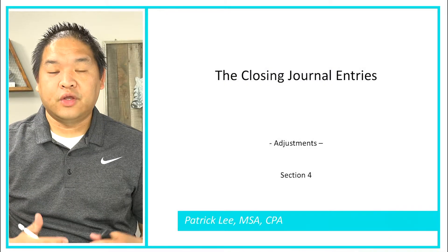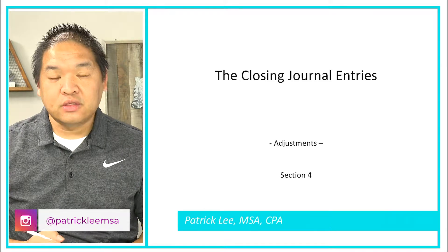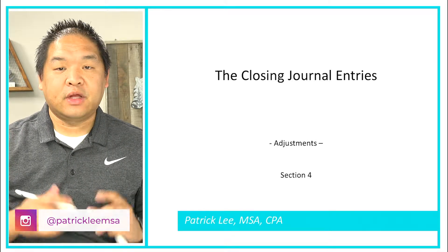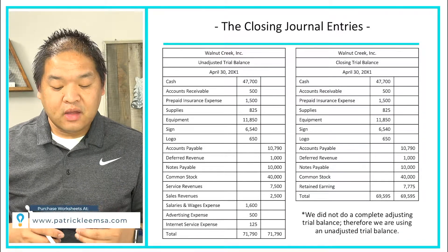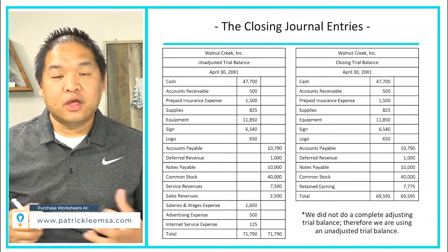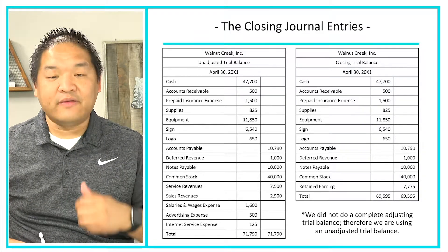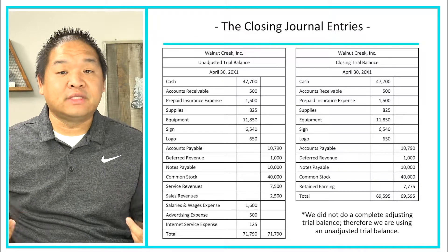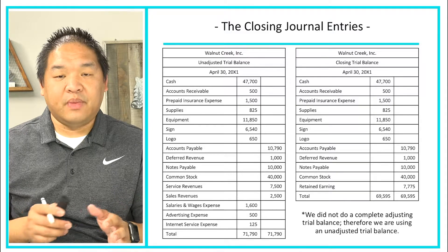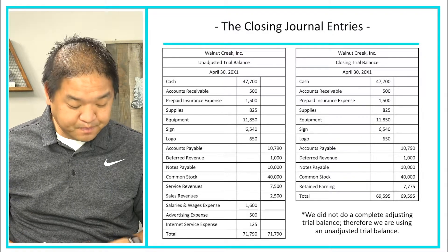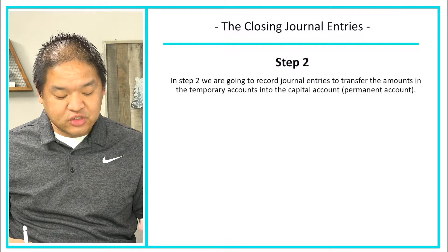In this lesson we're going to go over the closing entries from the last lesson and show you the journal entries associated with the closing process. What we already know is that we'll have to prepare the closing trial balance after this, and we are trying to get rid of our revenue, expenses, and dividends. In this case we don't have any dividends.